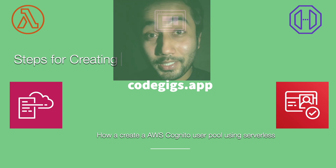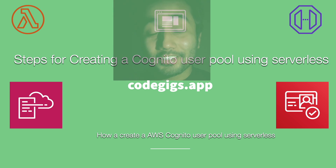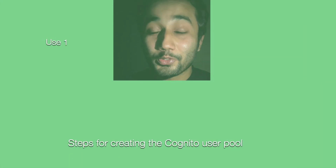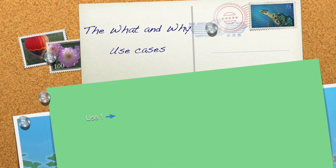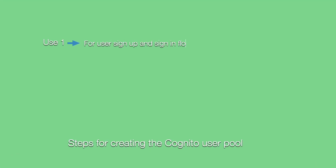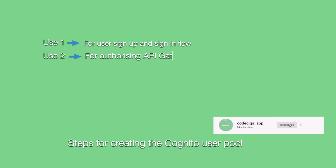Welcome to episode 8 of our React.js and AWS Serverless tutorial series. In this episode we are going to write infrastructure as code using the Serverless Framework for creating an AWS Cognito User Pool. The first use case is going to be for writing the sign up and sign in flow for our application. We can also use this same Cognito User Pool for authorizing the API Gateways we have written so far.